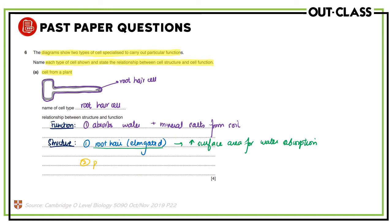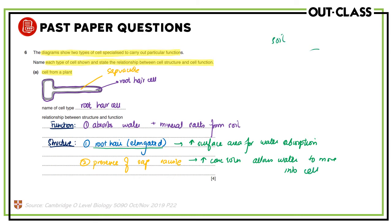The other adaptation is the presence of the sap vacuole. The sap vacuole contains a very highly concentrated solution inside, and what that does is it allows water to move into the cell. Water always moves from a place of high water concentration or high water potential to a place of low water concentration or low water potential, so water moves from the soil into your root hair cell. These are the two key adaptations of the root hair cell.